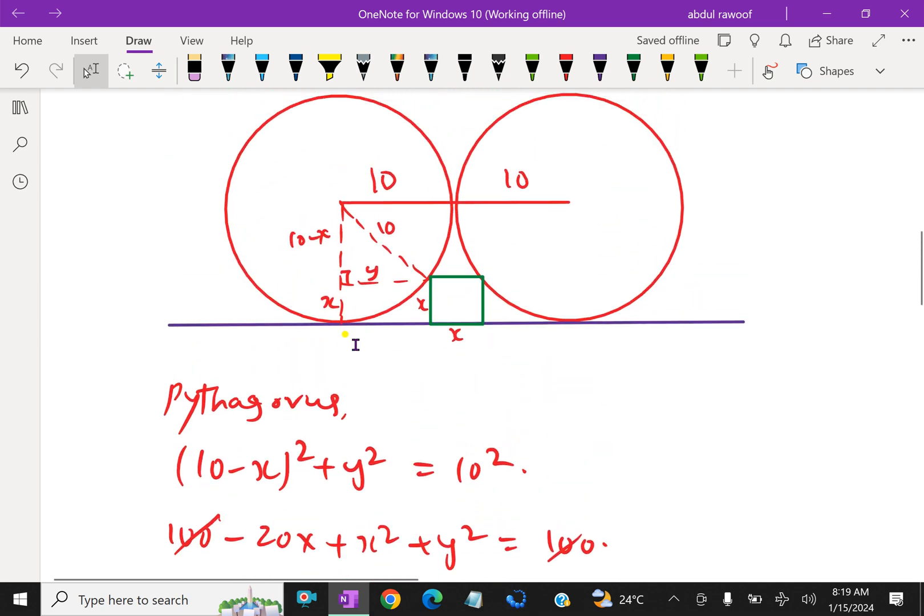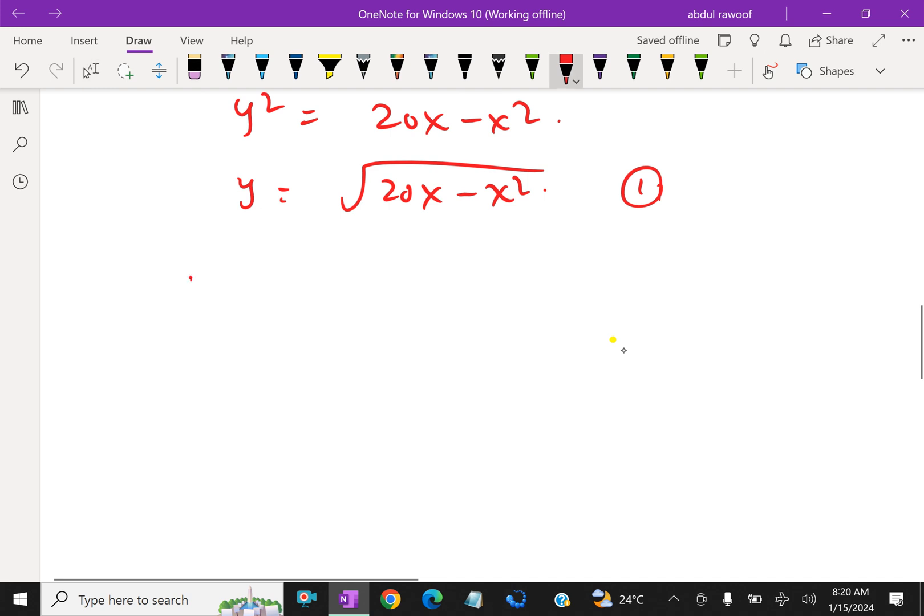Now here by symmetry, extend here, there is also y up to this. Now look at this horizontal distance y, here also x, x plus y from here to here, y plus x plus y equals 10 plus 10. That is y plus x plus y equals 20 by symmetry.